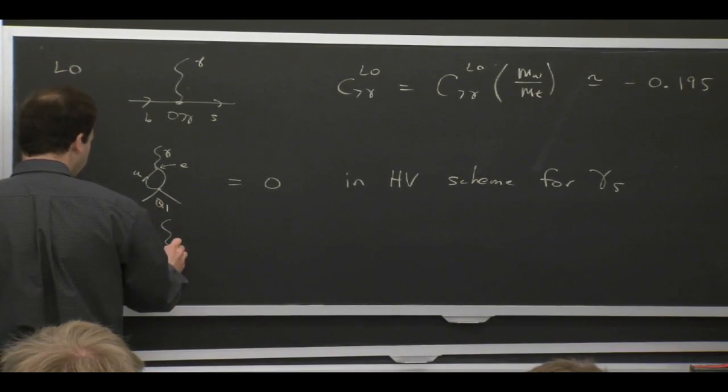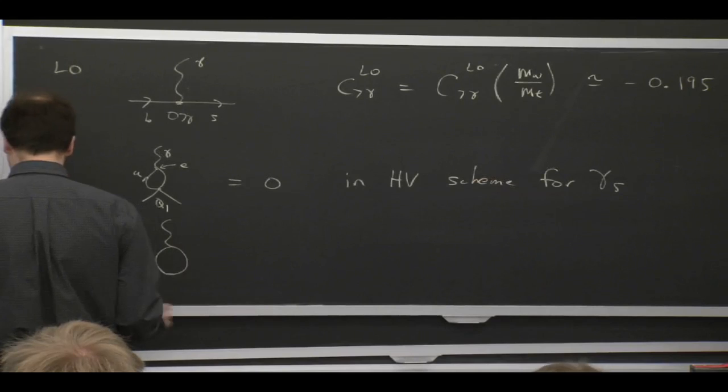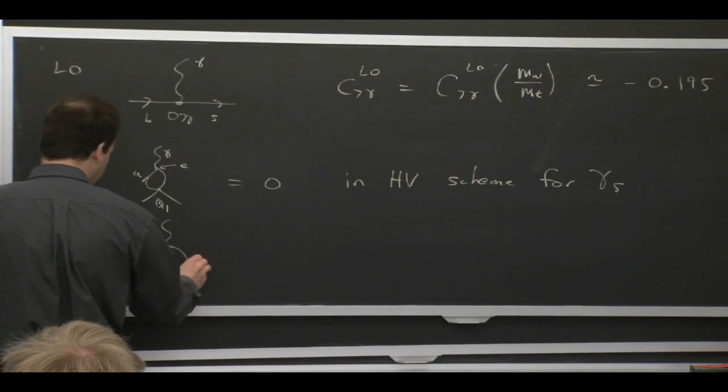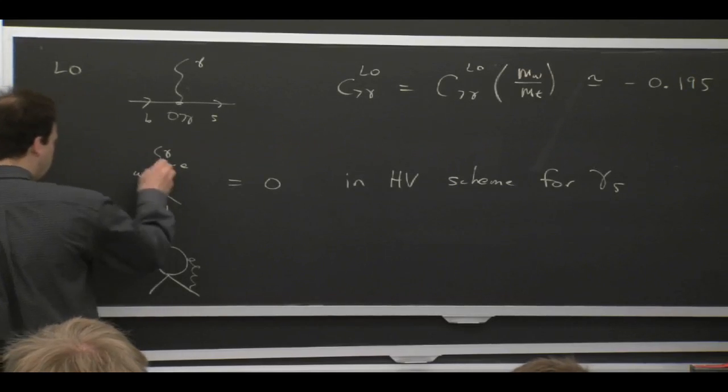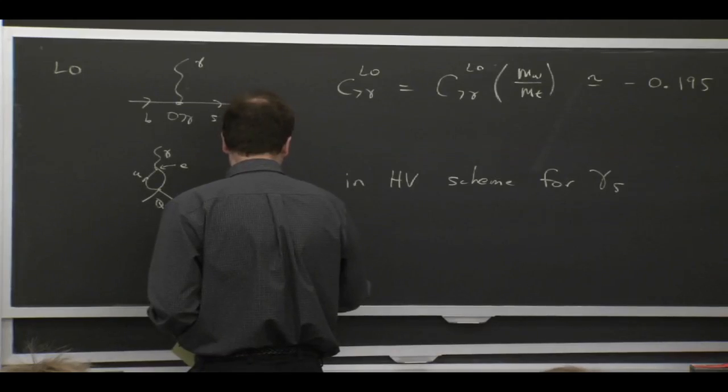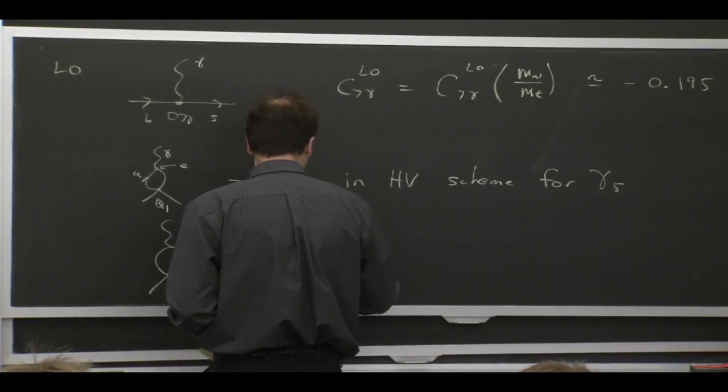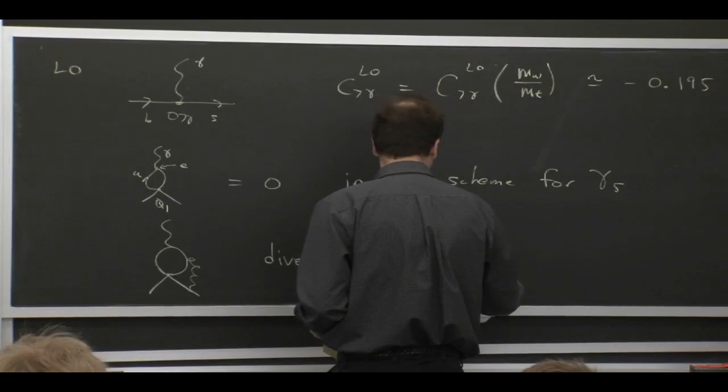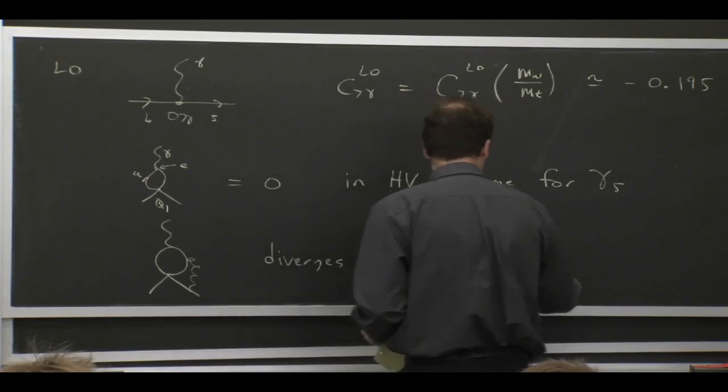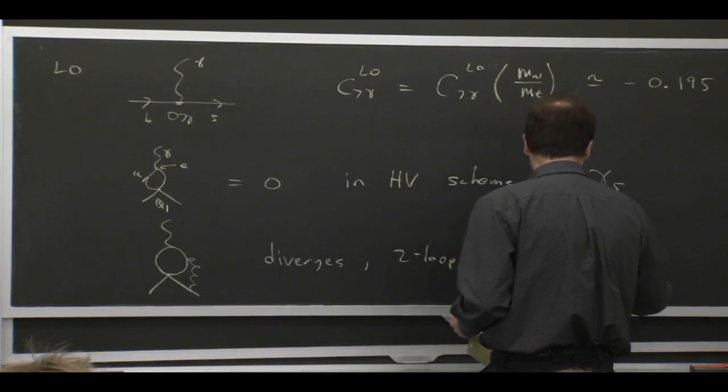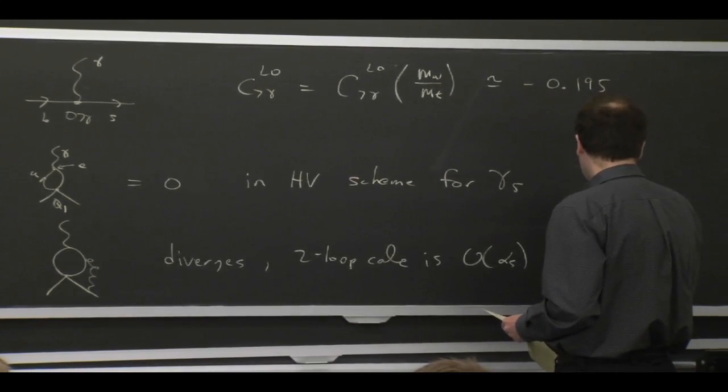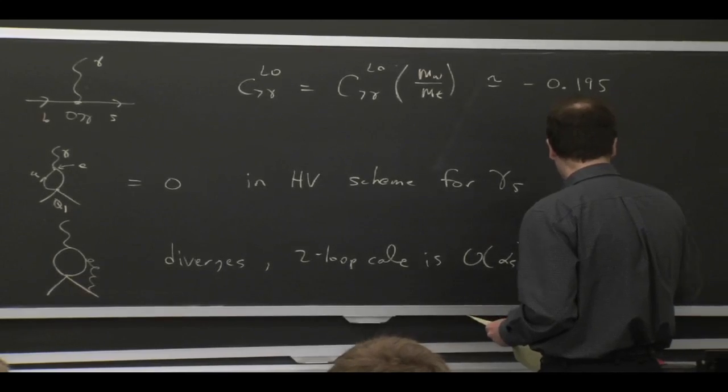So the first type of loop corrections that you get, which are suppressed by a factor of αs, come from diagrams like, well, there's various diagrams. But one of them is like this, where I take the same diagram there and I attach an extra gluon on top of it. So this guy diverges and this two loop calculation is order alpha strong. And it gives the leading order anomalous dimension, what we were calling γ0. It's not the only diagram. There's other diagrams, too.